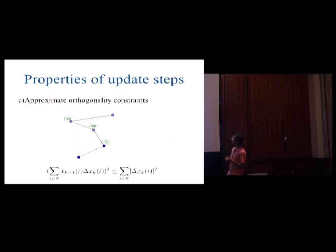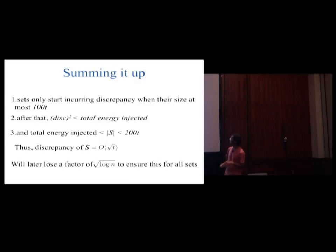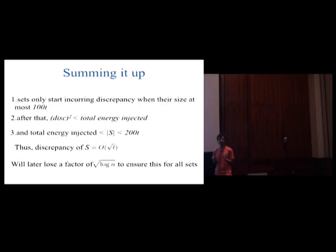To prevent this, we demand a third property from our update steps, which ensures that the total energy injected does not become too large — it roughly stays about twice the final energy. Once we have this, the total energy injected is at most 200T, and following the same strategy, the discrepancy of a set is order root t.